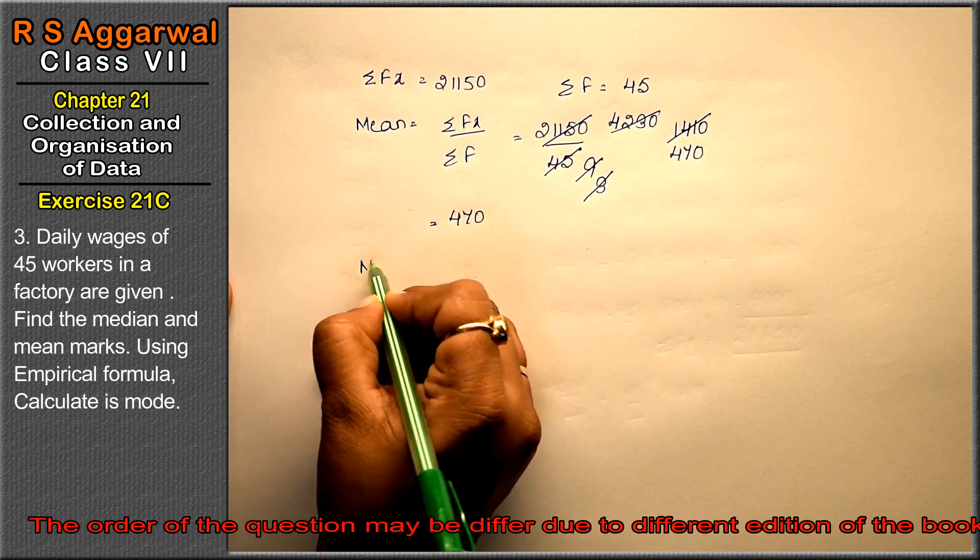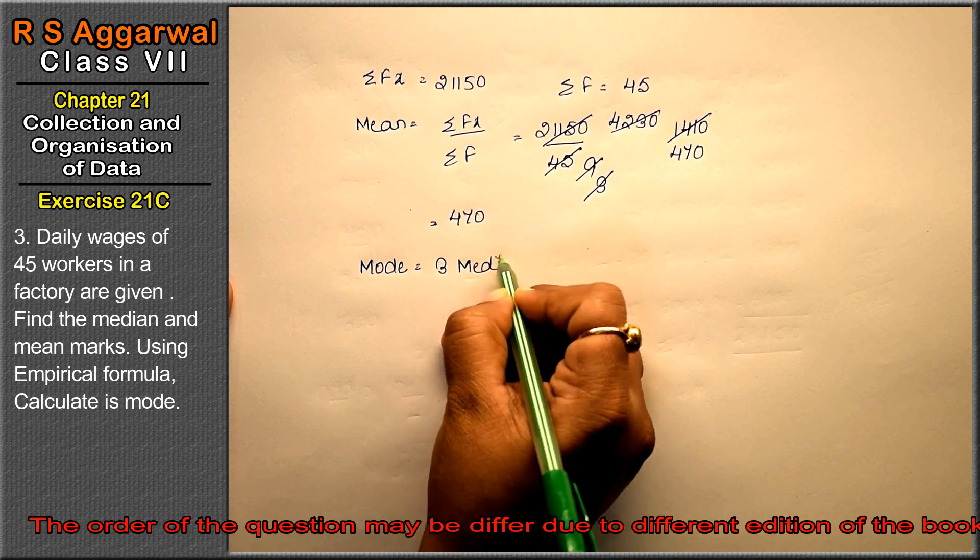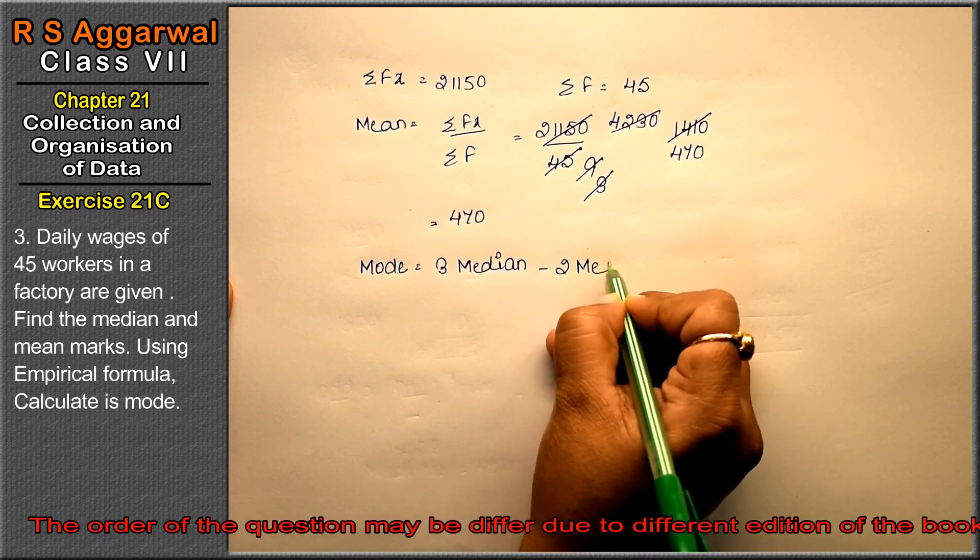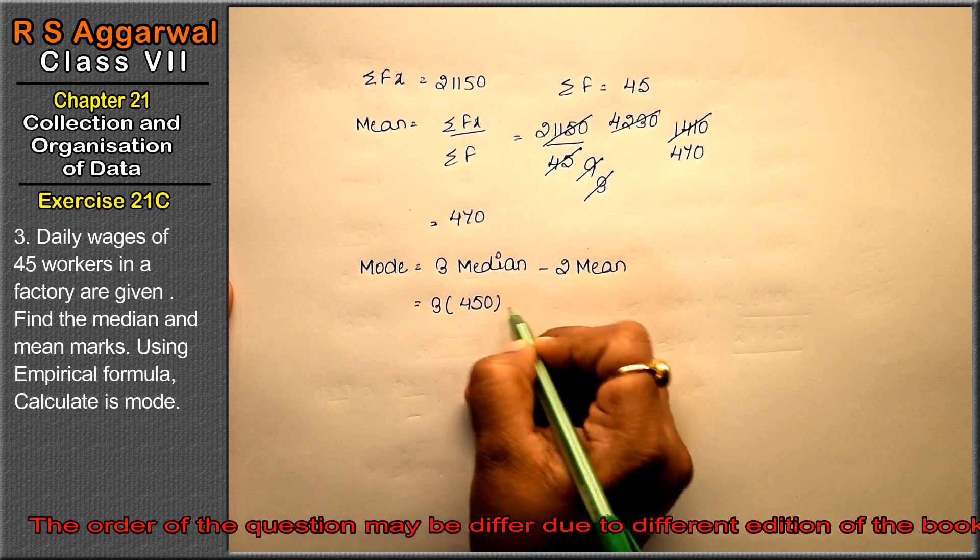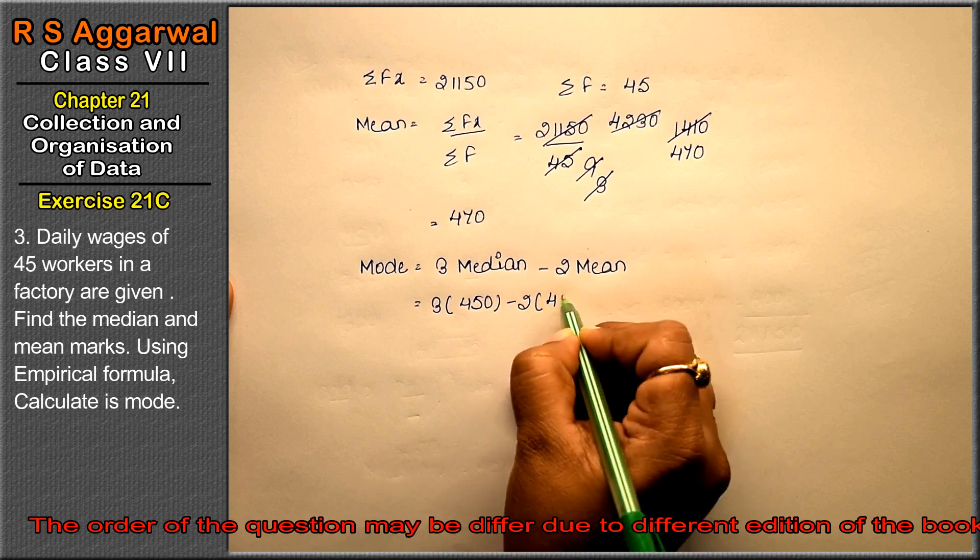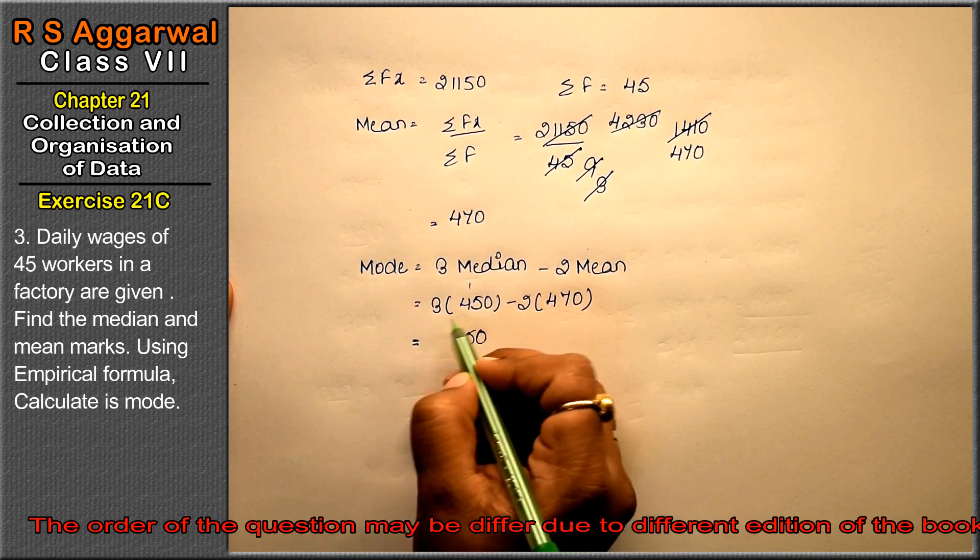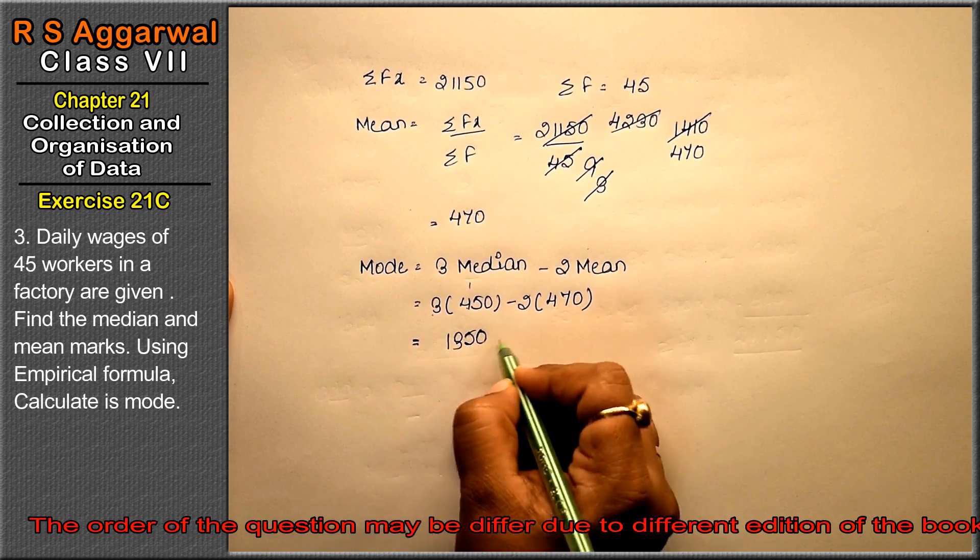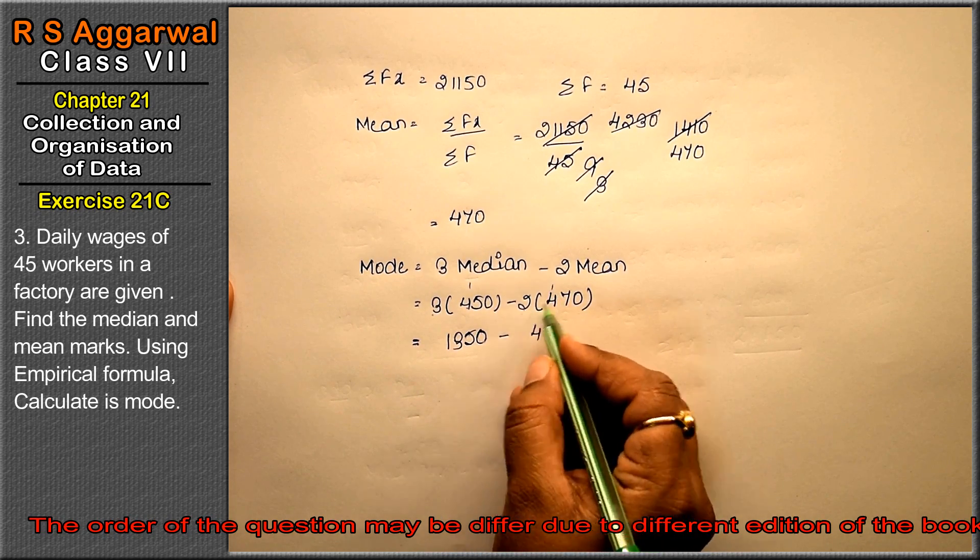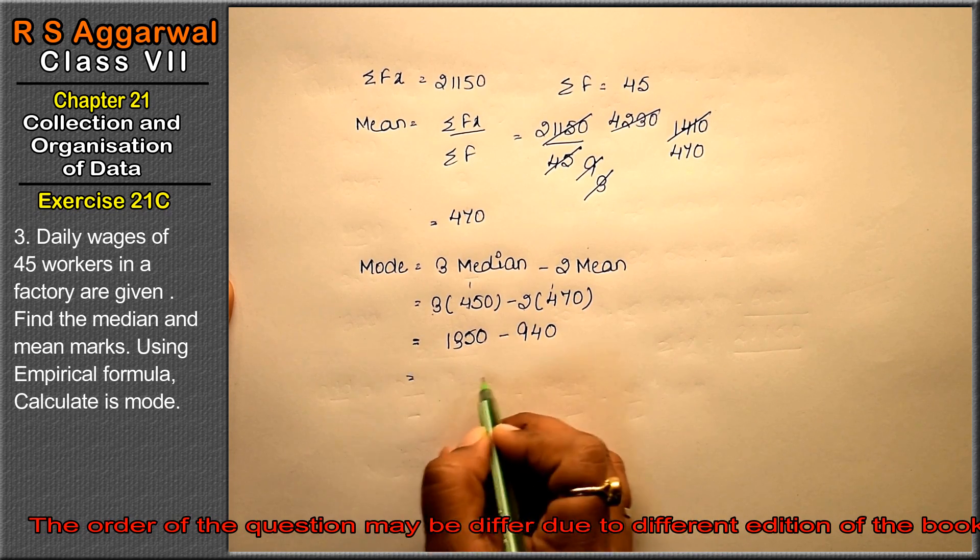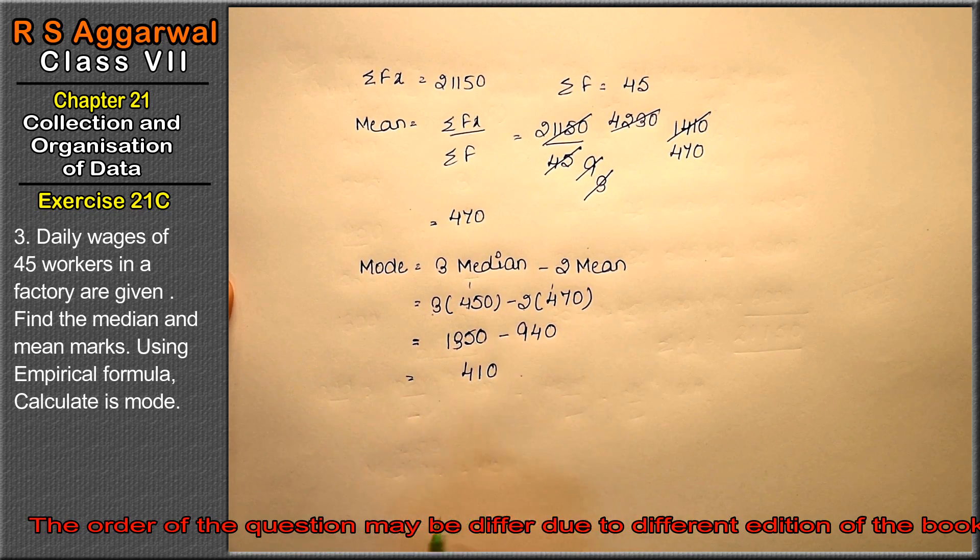Now we have to find mode using the empirical formula. So the mode formula is: thrice of median minus twice of mean. Our median is 450 minus twice of mean 470. So how much is it? 0, 3 fives are 15 carry 1, 3 fours are 12 and 13, that's 1350 minus: 2 zeroes are 0, 2 sevens are 14, carry 1, 2 fours are 8 and 9, that's 940. So how much is it? 0, 1, 13 minus 9 is 4, that's 410. The mode is 410.